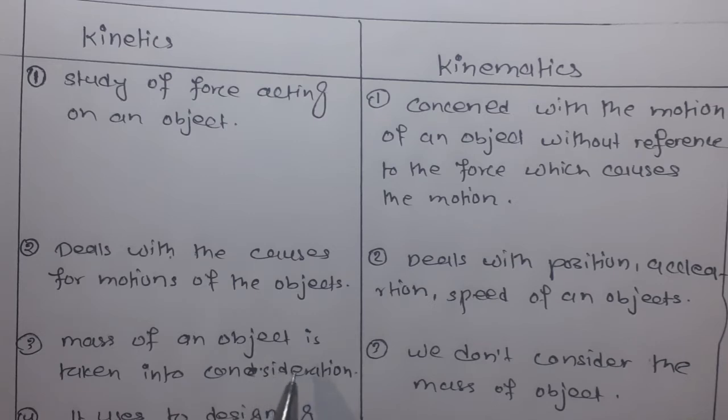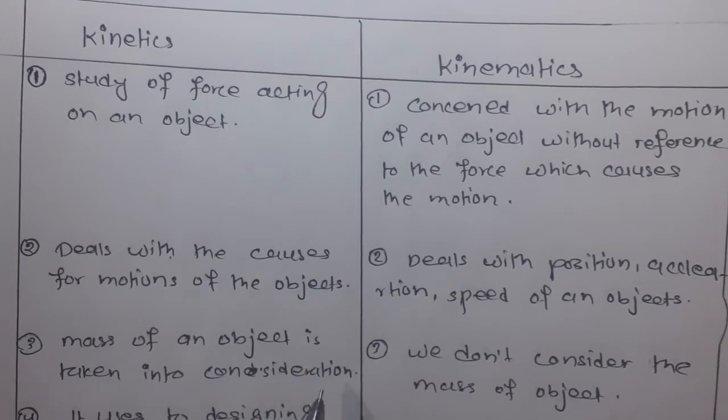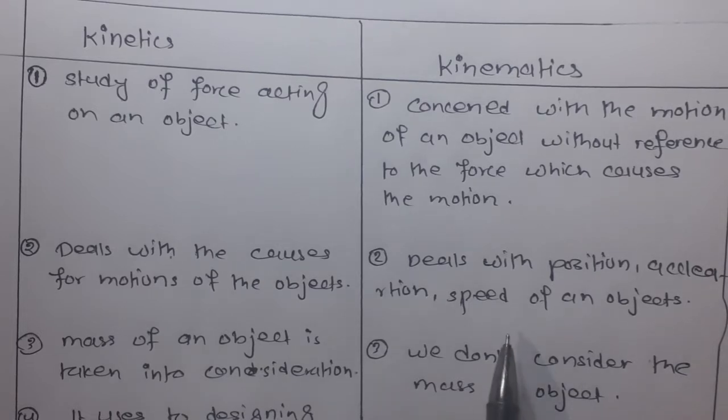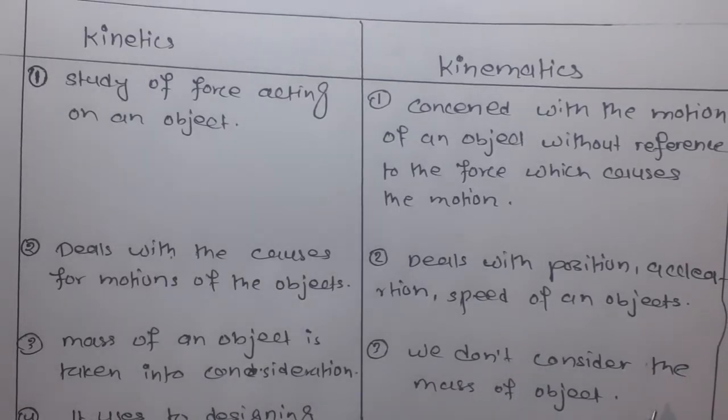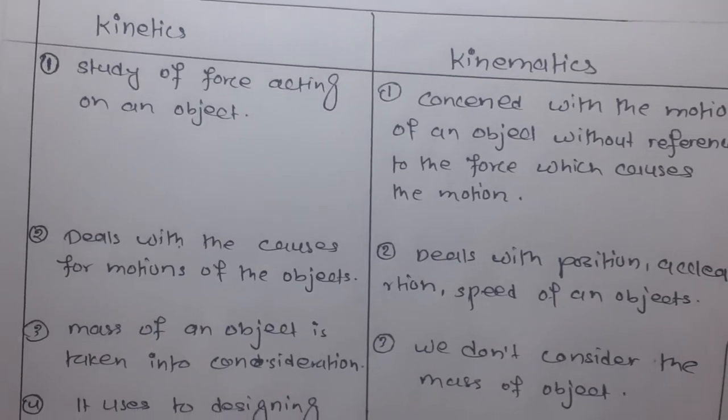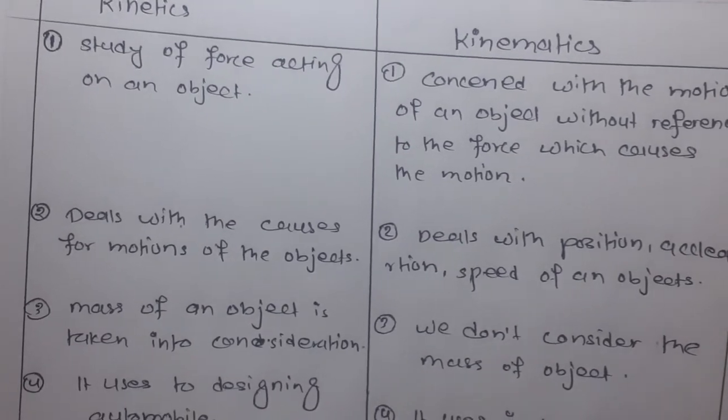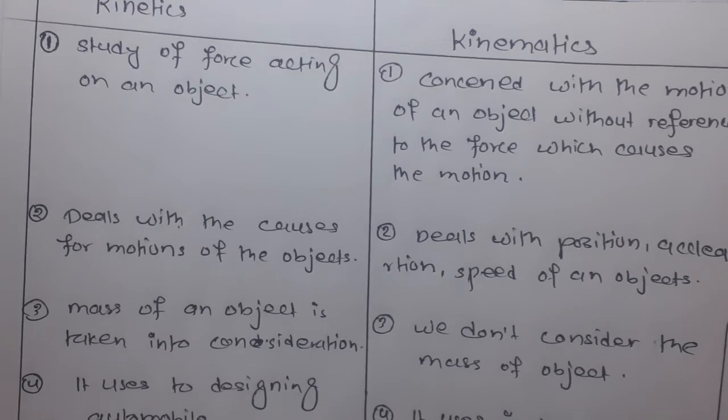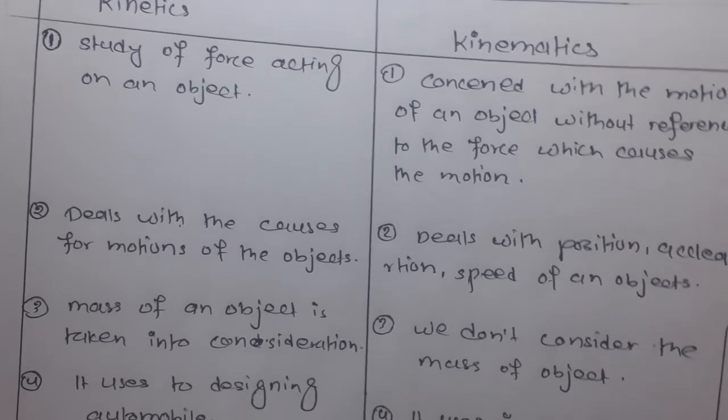Mass of an object is taken into consideration in kinetics. Mass of object is considered in kinetics, but in kinematics we don't consider the mass of an object. Kinetics is used for designing automobiles and is used to study movement between components.